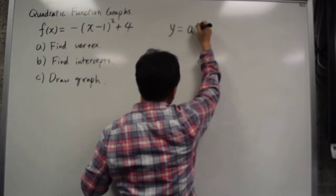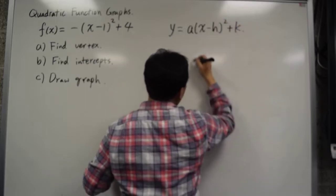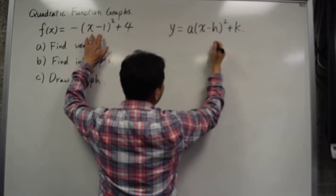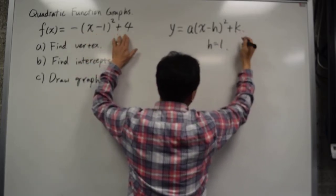Vertex form is y equals to a times x minus h squared plus k. So h, if you compare these two, h is equal to 1. And then k is equal to 4.